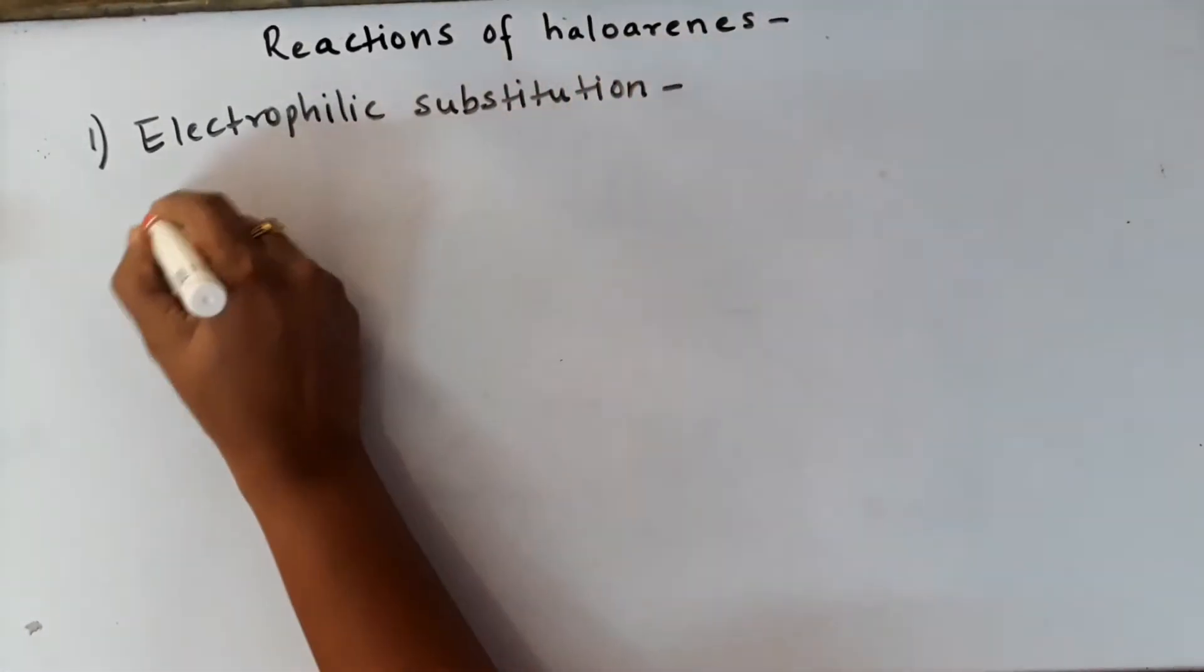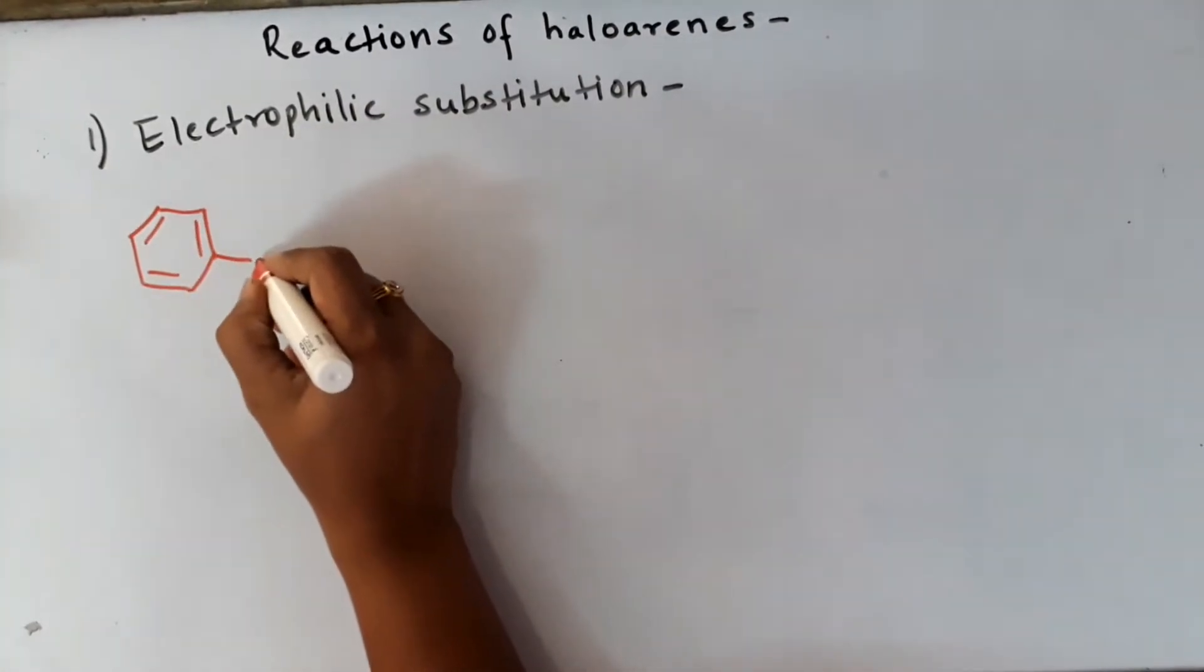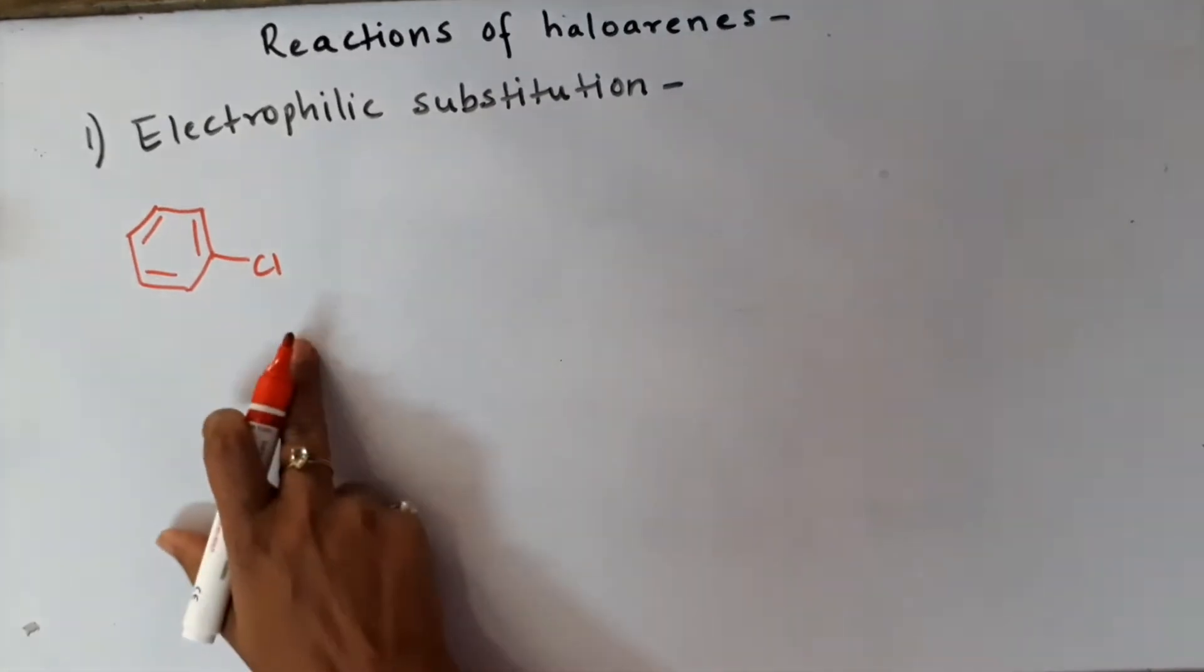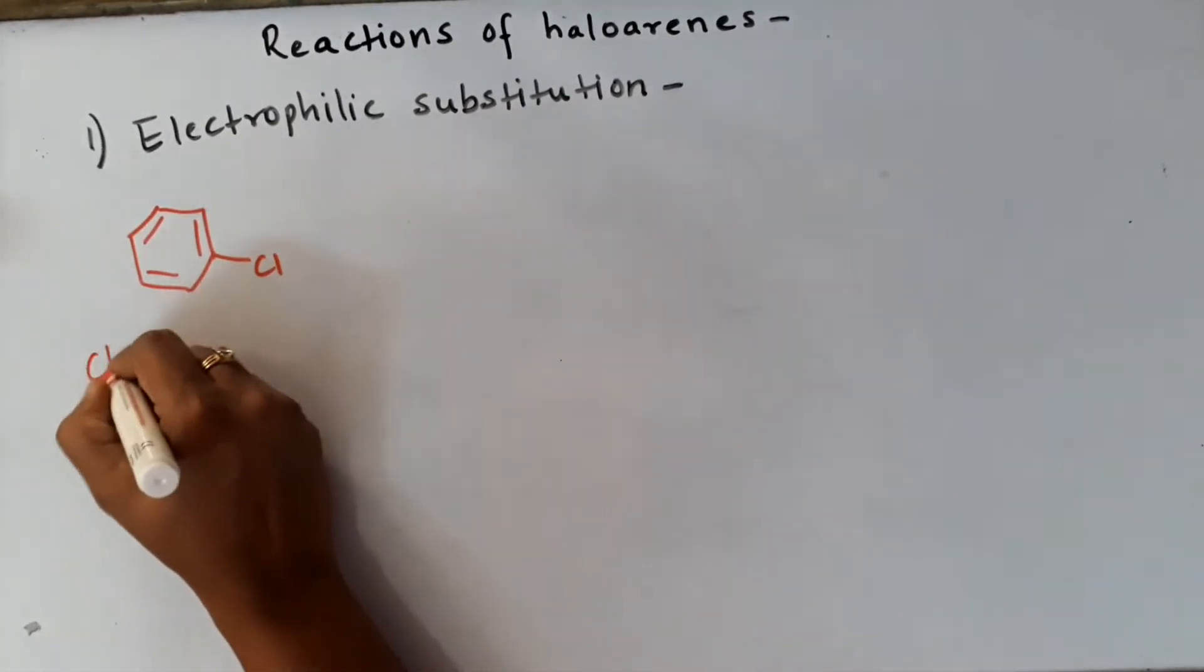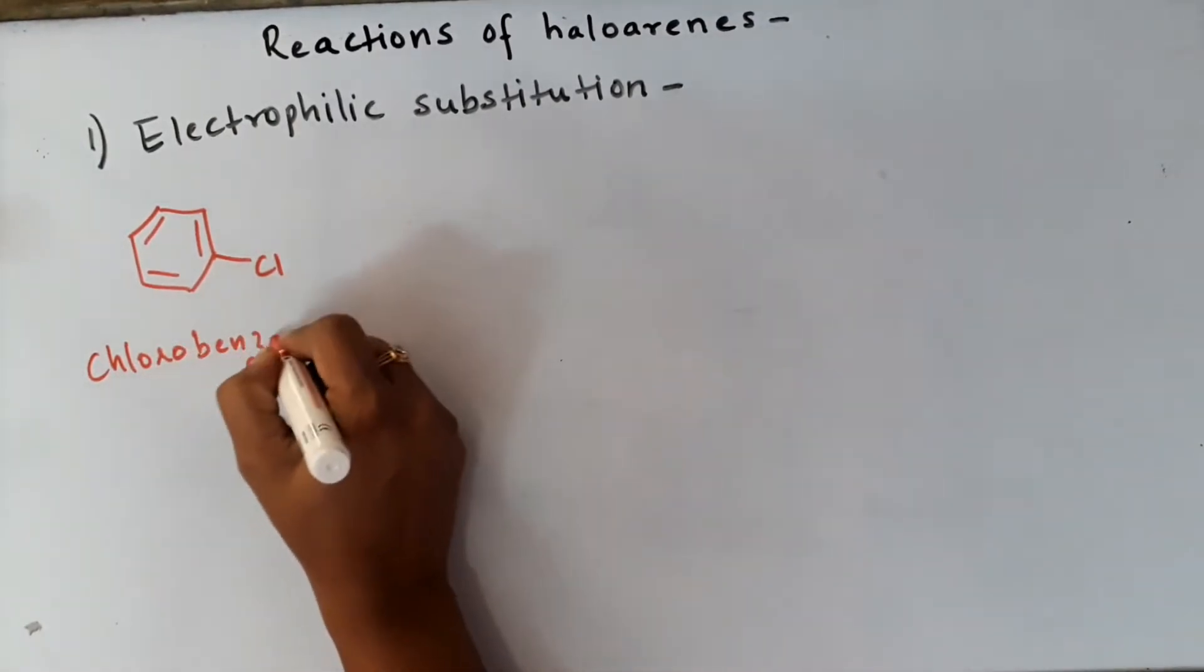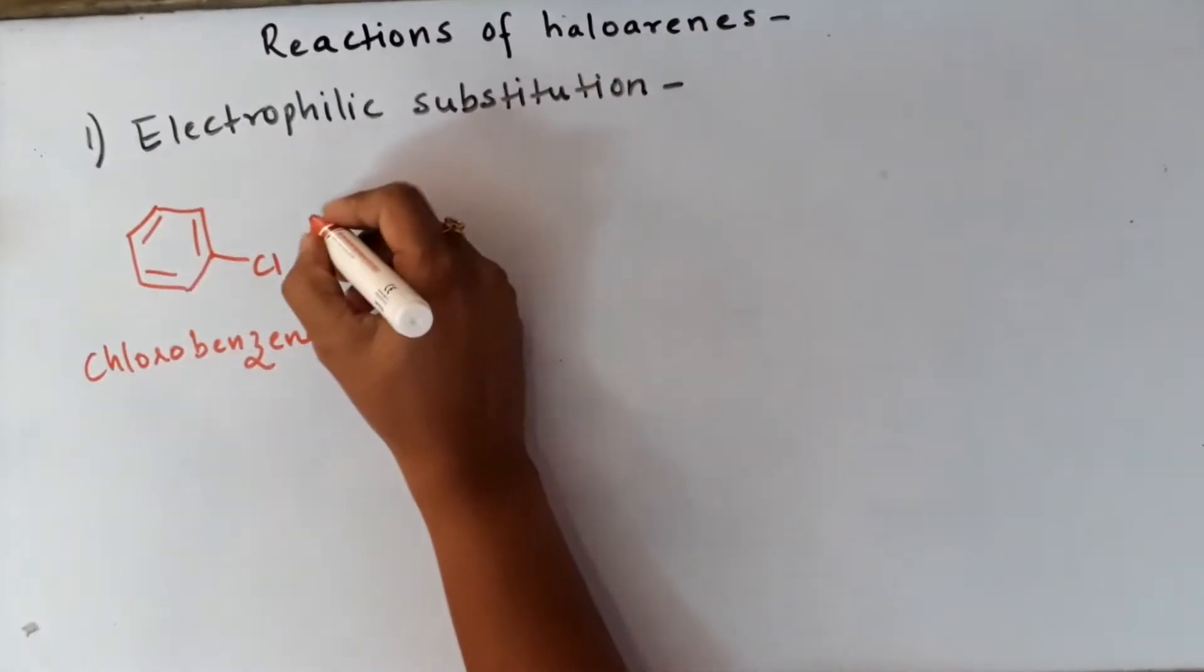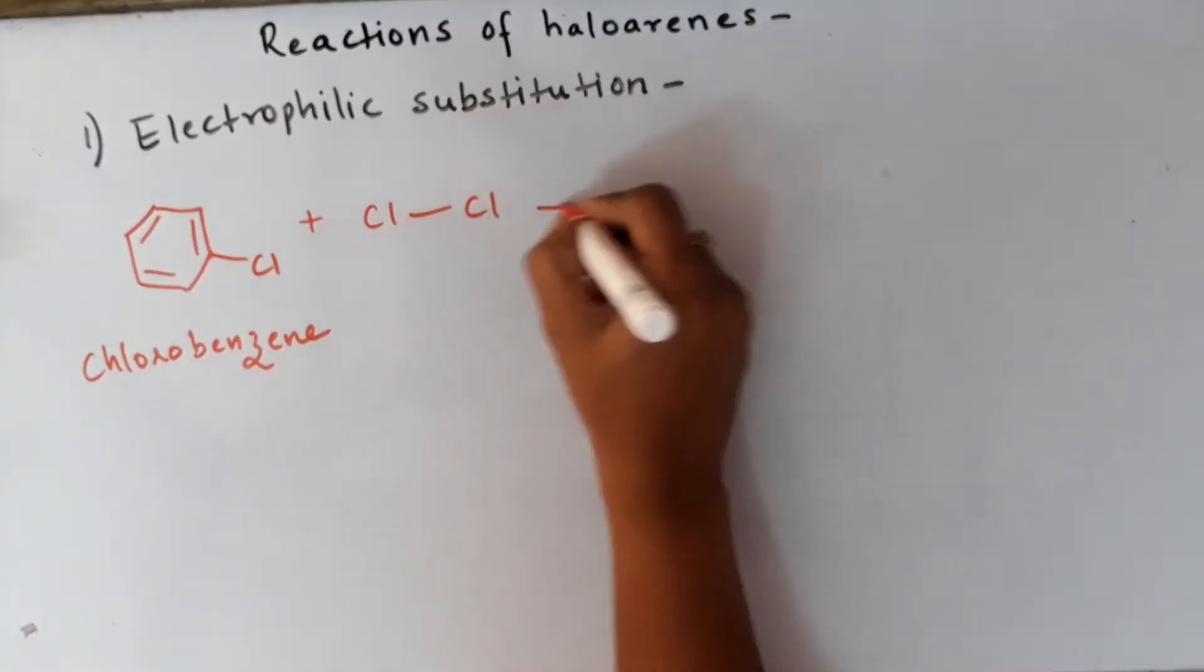In electrophilic substitution reaction, we will take the first compound haloarene, for example chlorobenzene, and react it with any halogen reactant like chlorine. This molecule is chlorobenzene. Let us now react this with the electrophilic reagent, that is chlorine molecule Cl-Cl.